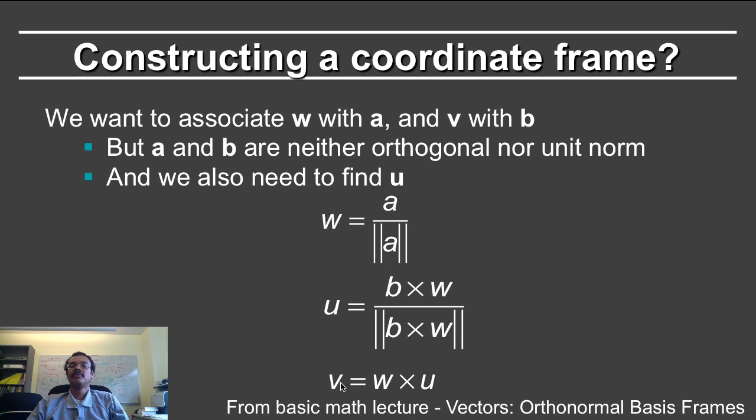Finally, you can create v as w cross u, which is an identity that must hold in an orthonormal coordinate frame. We'll go back to this early construction we saw in the basic math lecture.